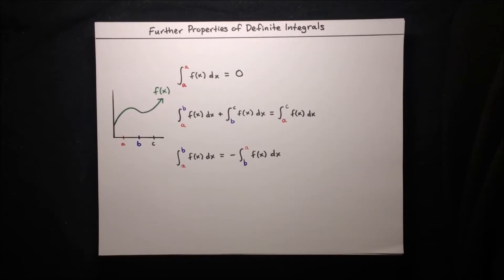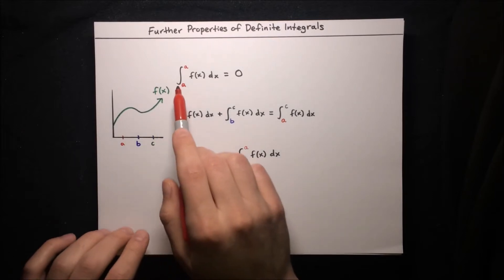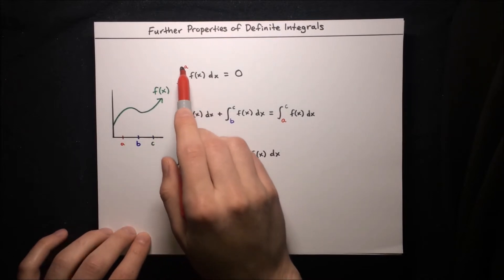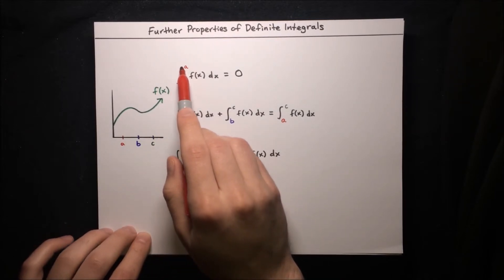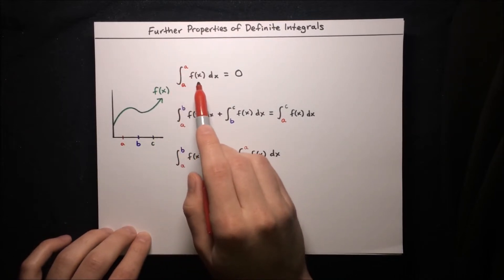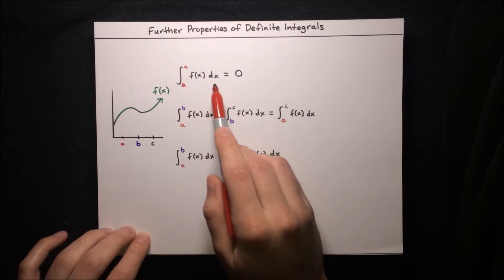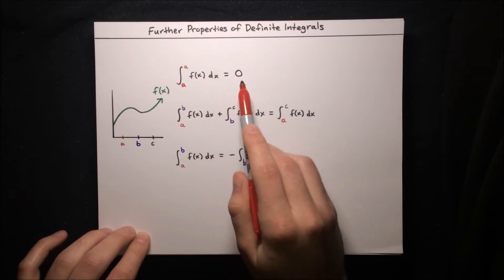In this video we're going to learn about further properties of definite integrals. Here's our first property: the integral from some number a to the same number a of a function f(x) dx is always equal to zero.